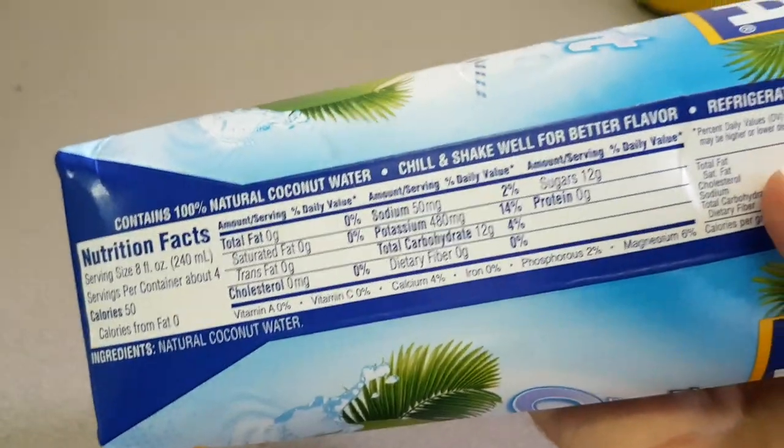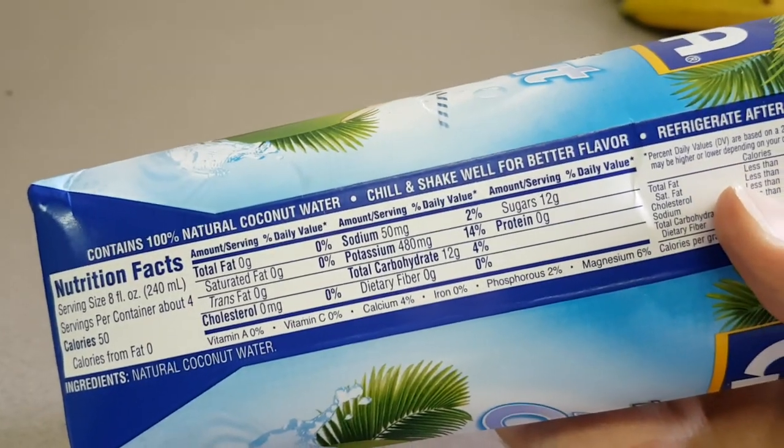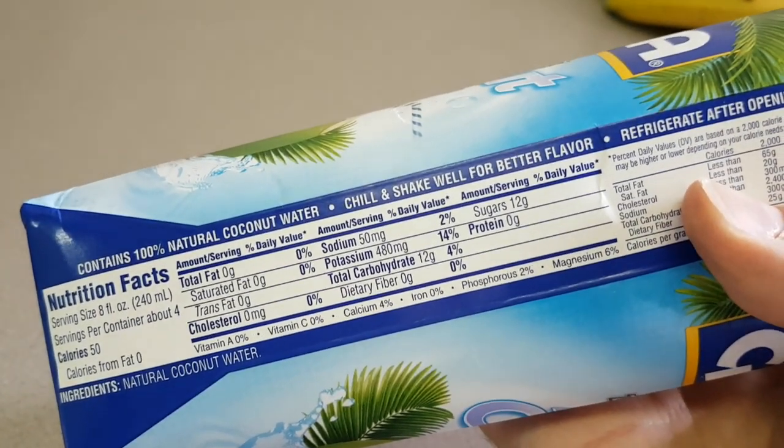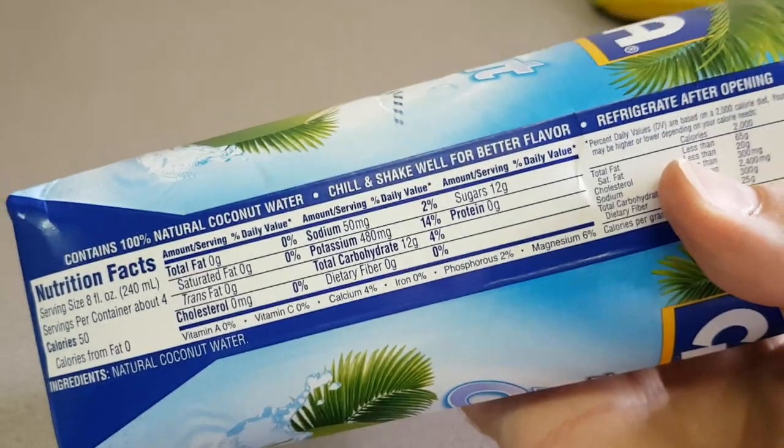And on the back here you can see that, on the other side, for every 8 fluid ounces, 240 milliliters, there is 480 milligrams of potassium.